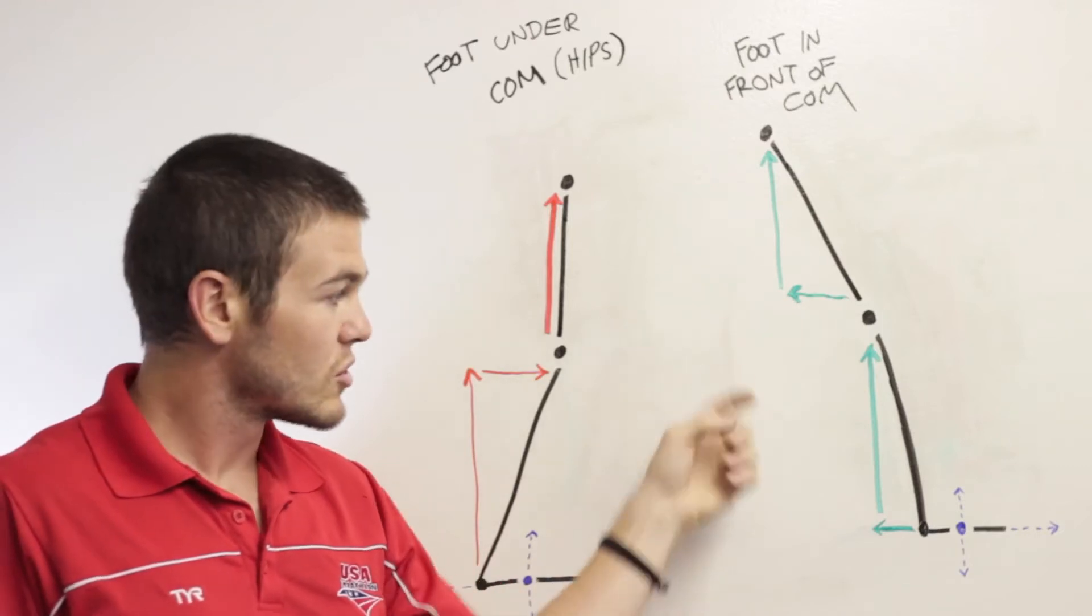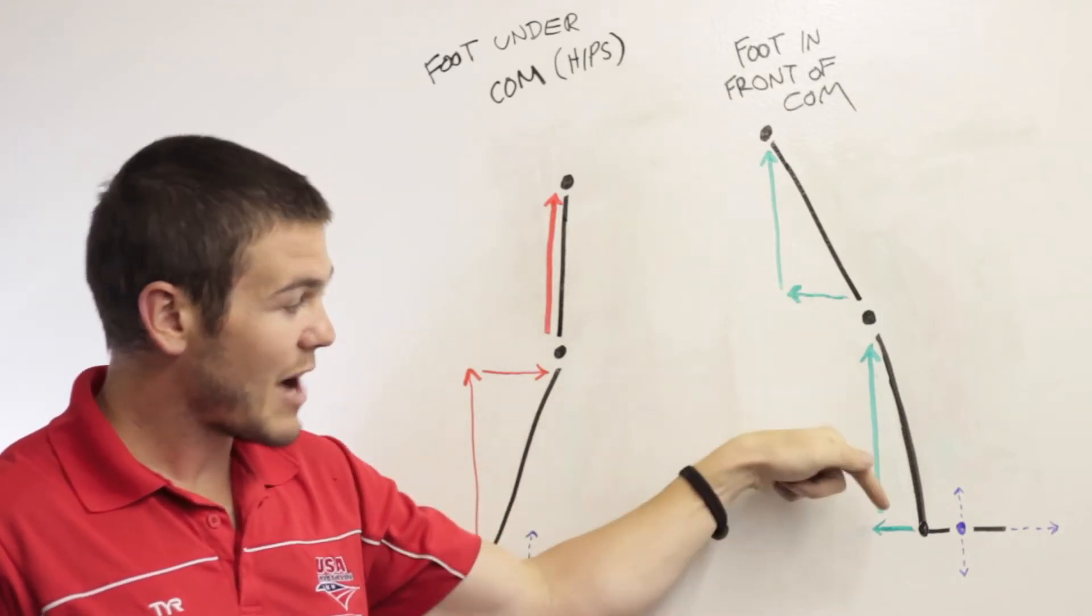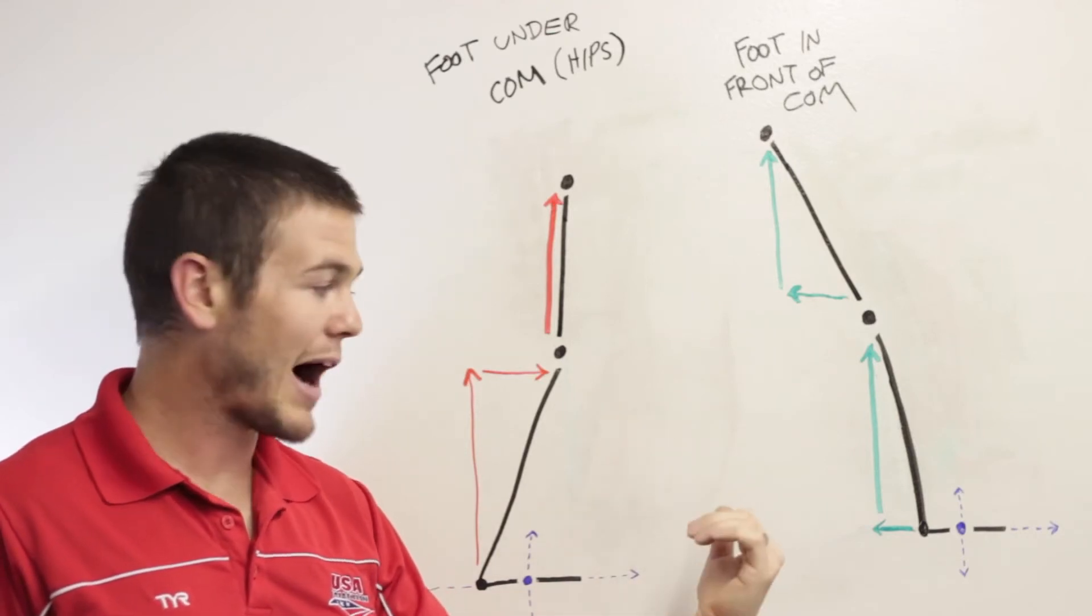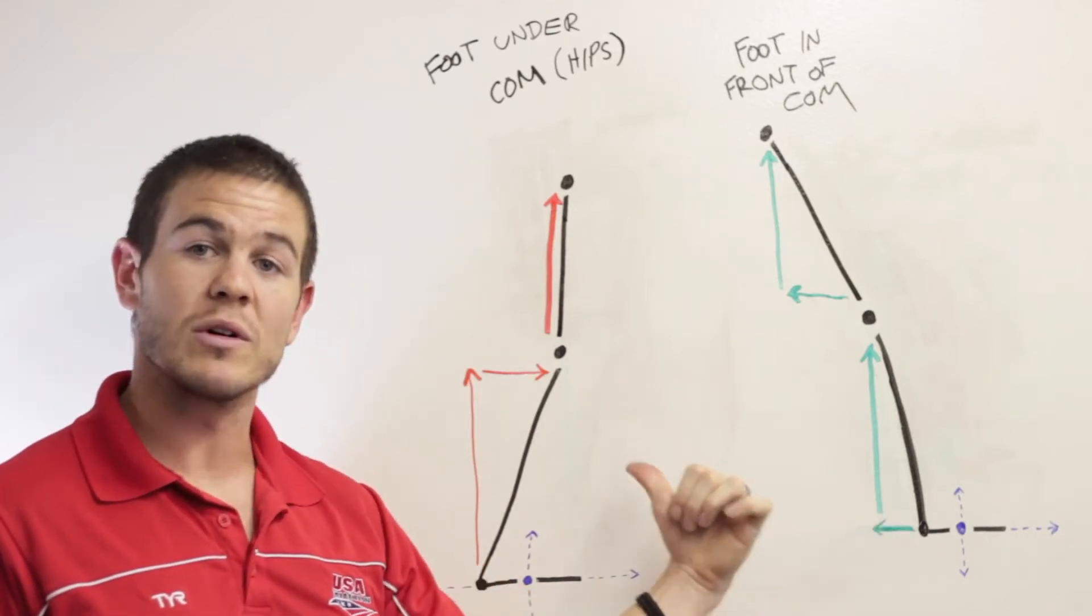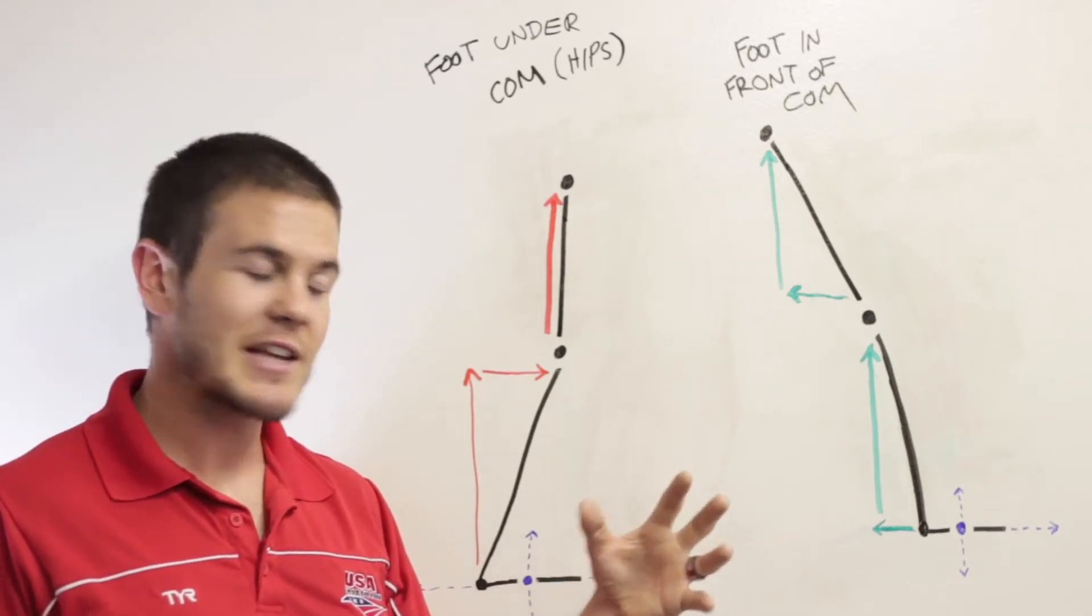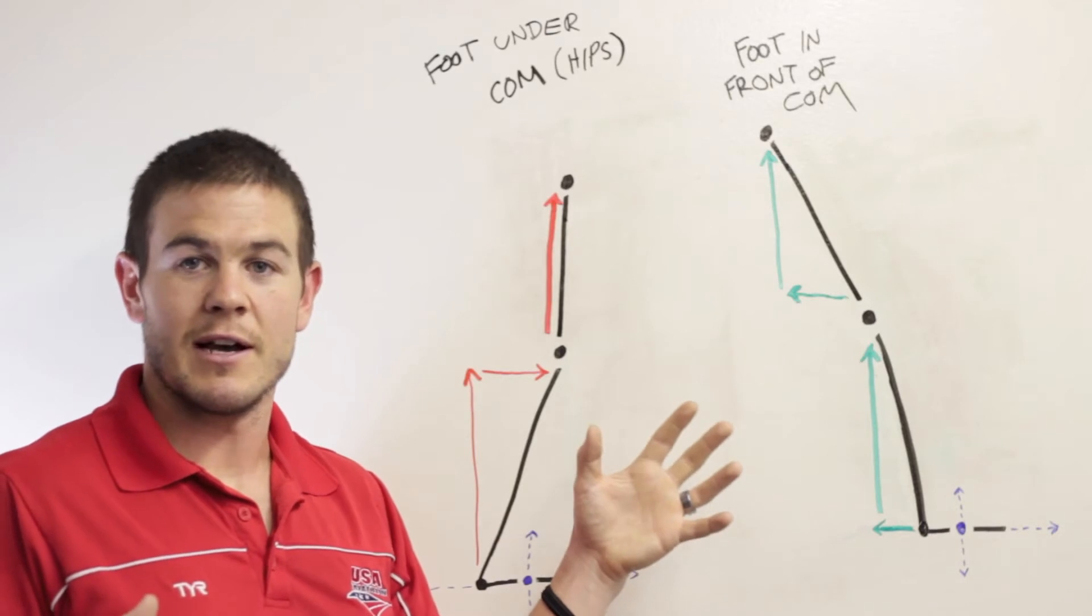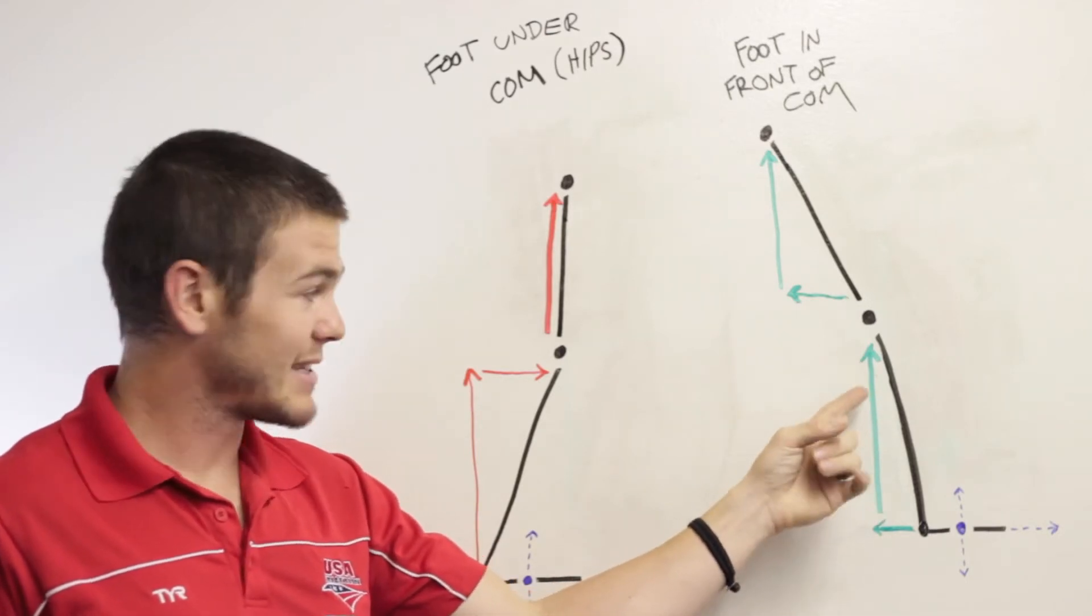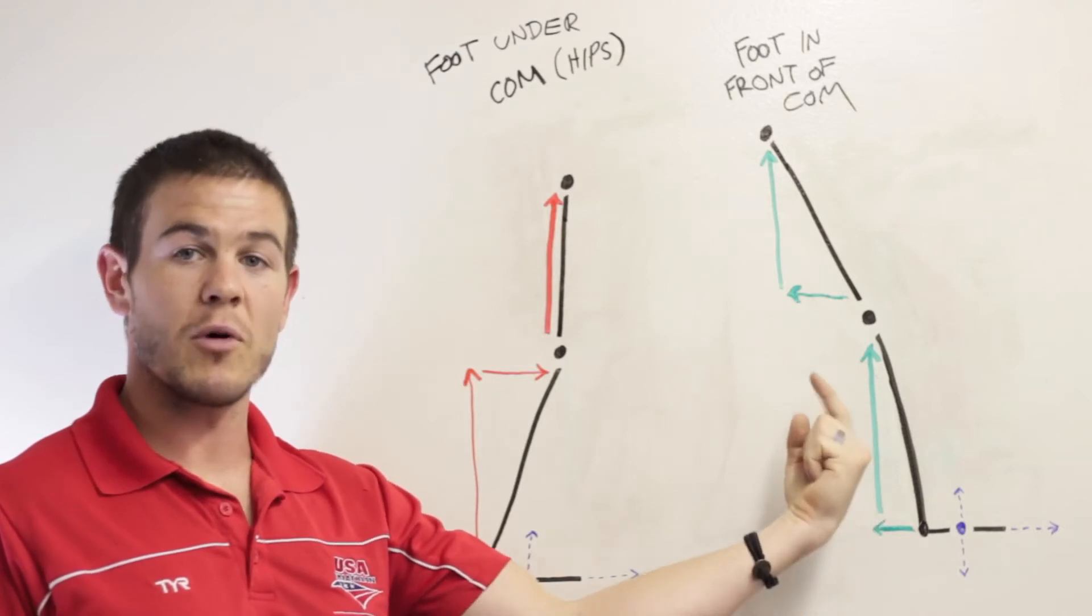So generally on the heel striker or front side contact, as we call it, the shin is angled backwards. So you've got downward and forward force into the ground. So the ground is then going to go opposite, going to push you backwards and upwards. Now, it happens very fast, but it doesn't all happen at once.